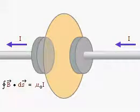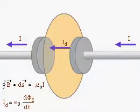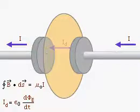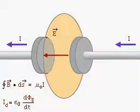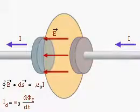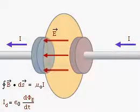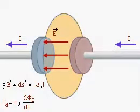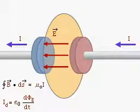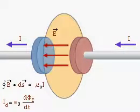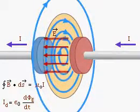Ampere's law can be generalized by incorporating the displacement current. Ampere's law gives consistent results only if it is true that a changing electric field produces a magnetic field.